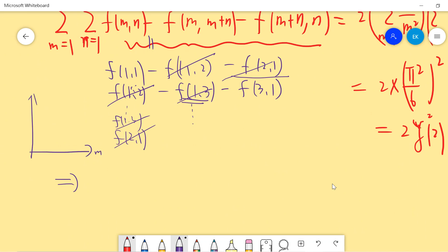Basically, considering all these integer points m,n, you will find that only the diagonal terms survive. So the left-hand side is just equal to the sum from n equals 1 to infinity of f(n,n). So we have this result.